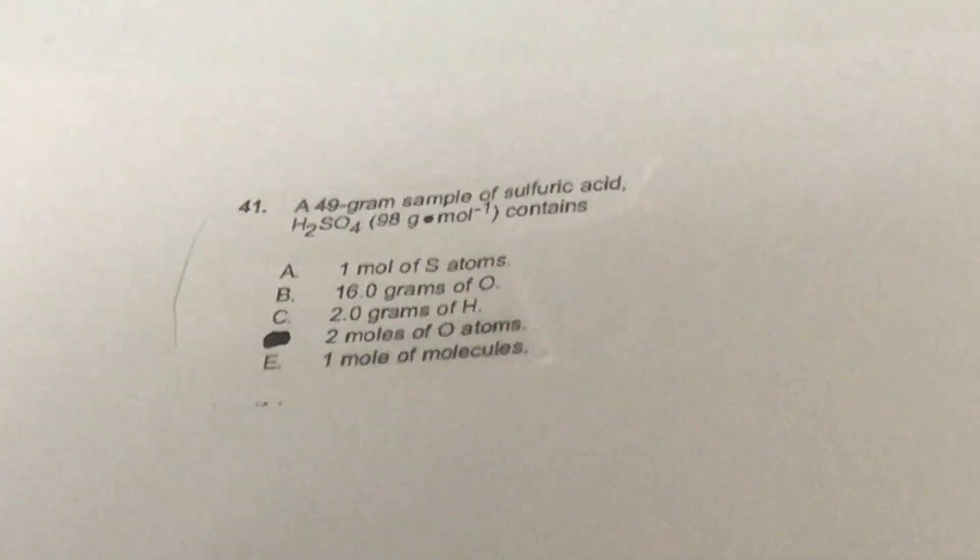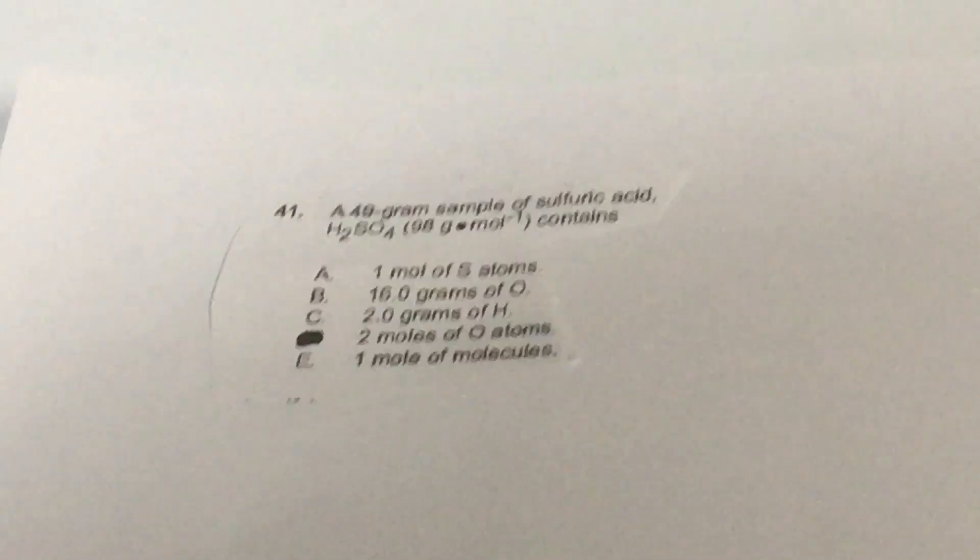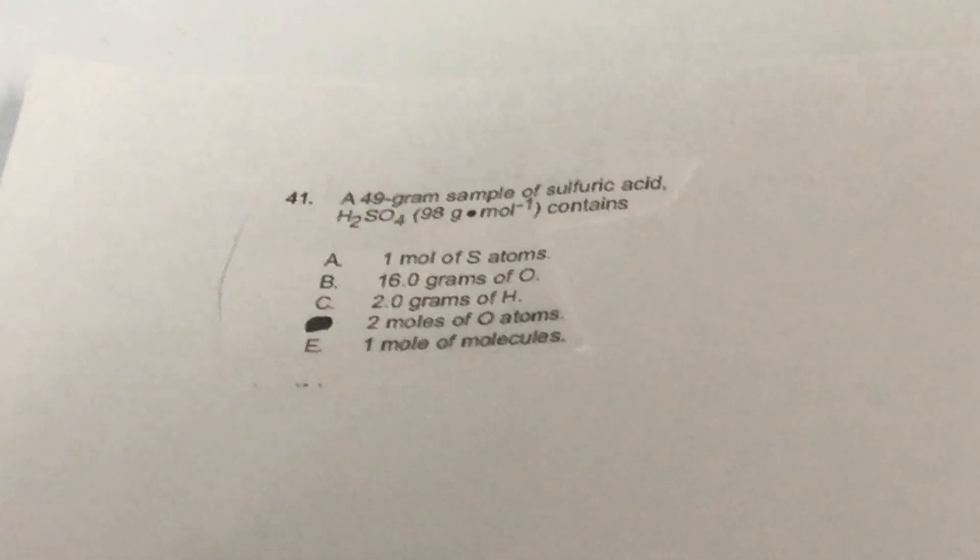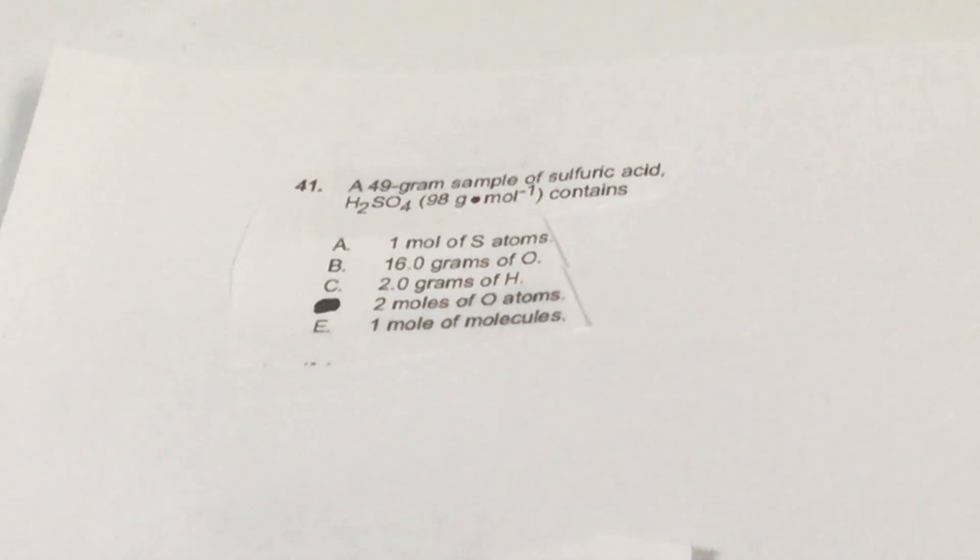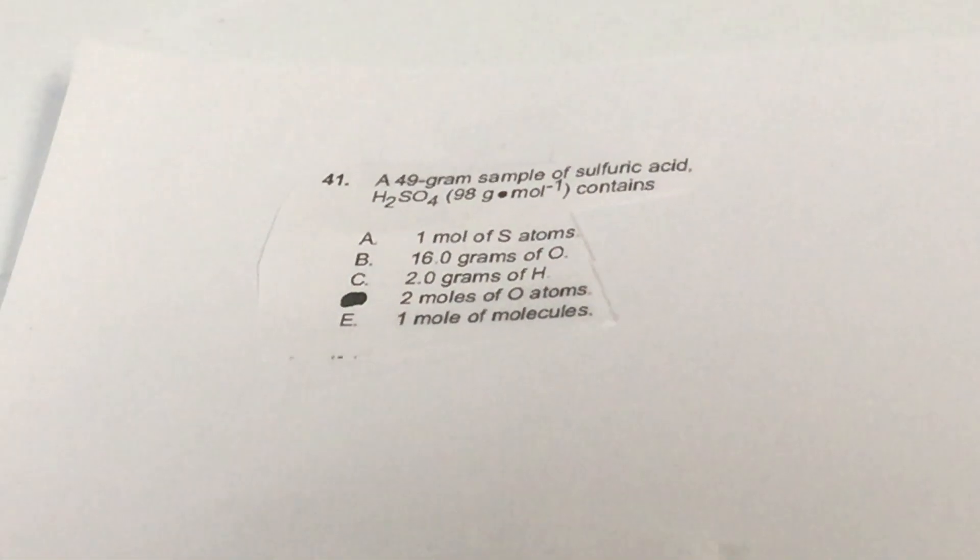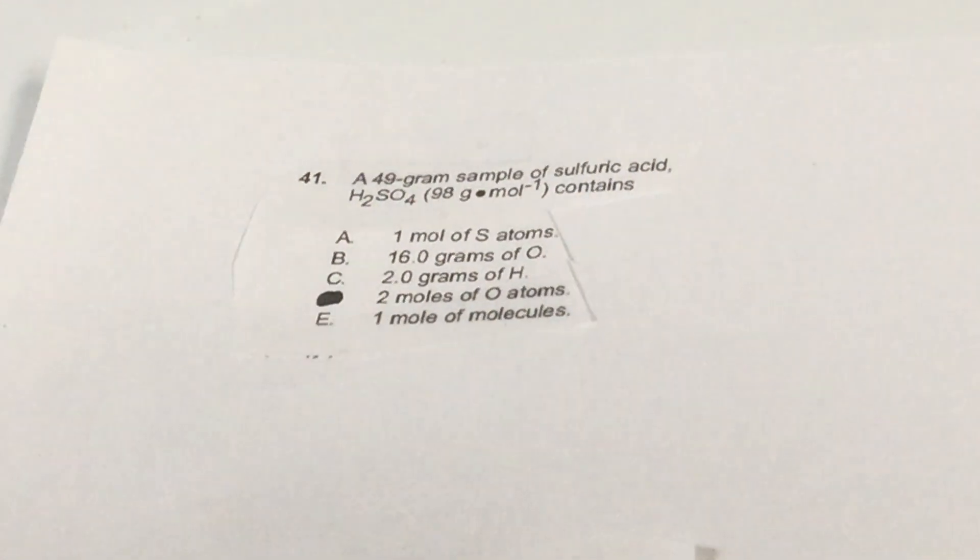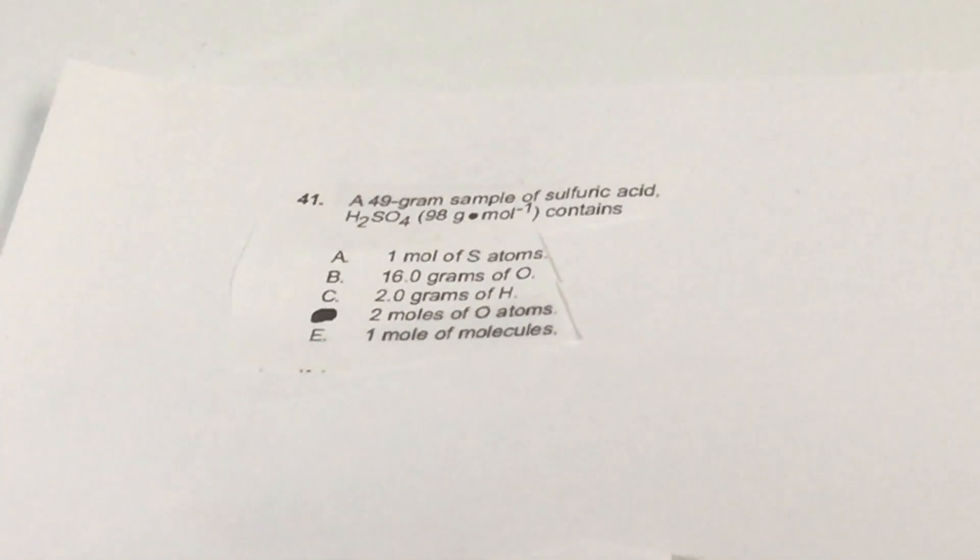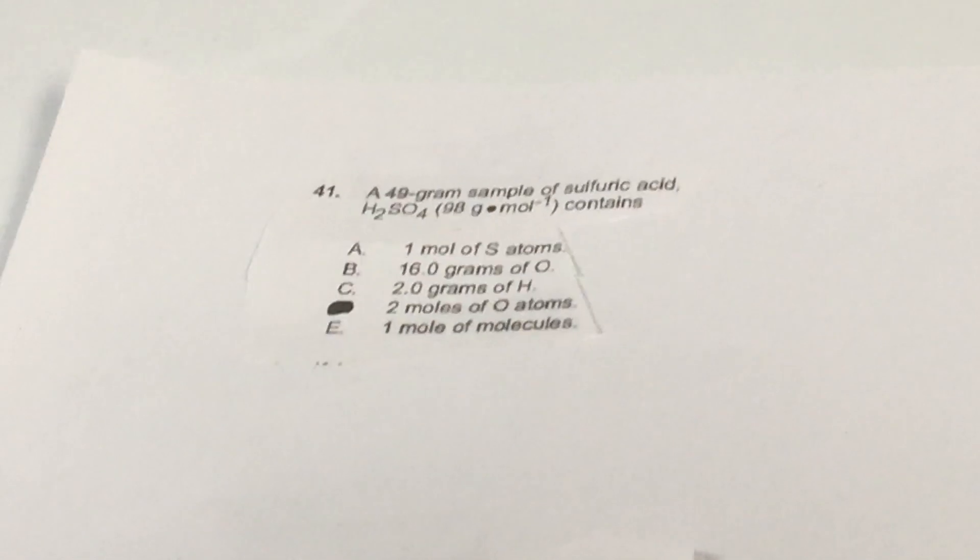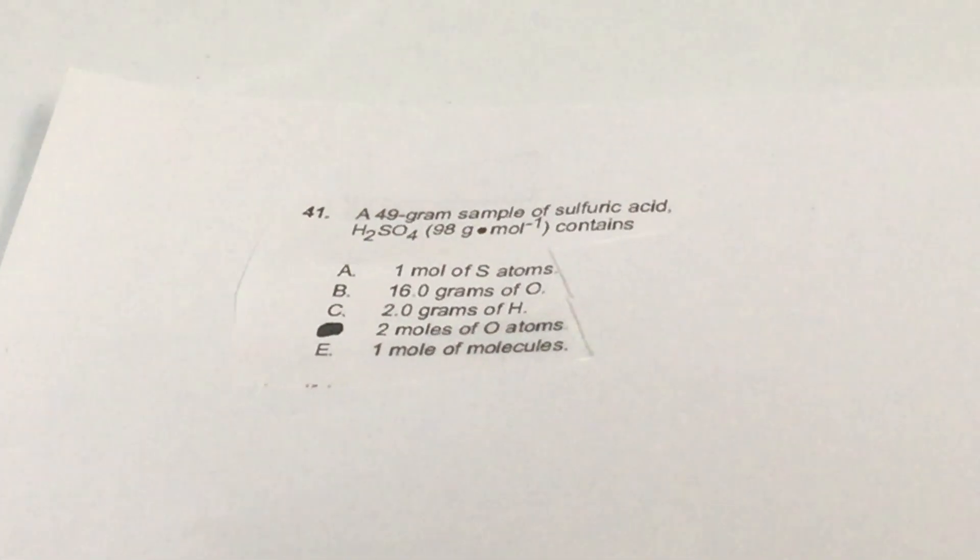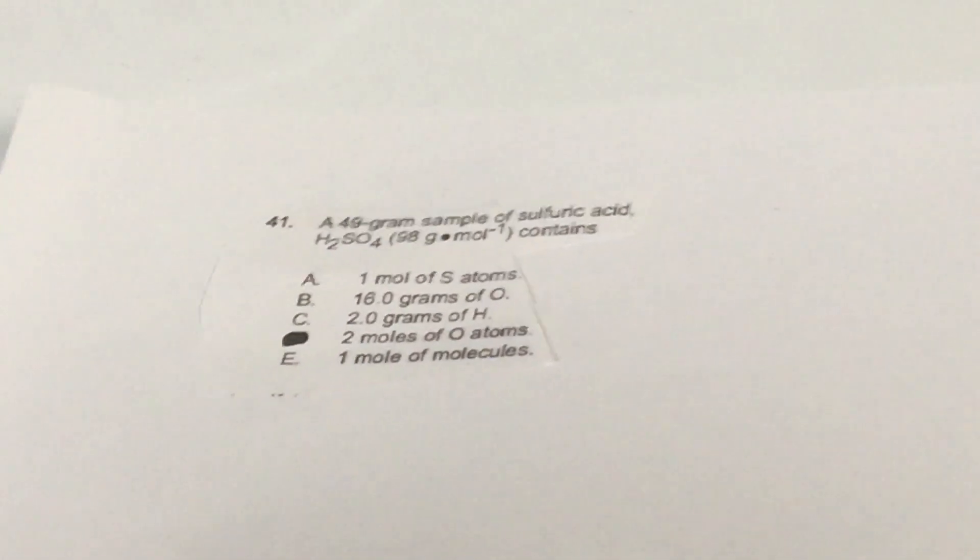In the first problem it says here that we have a 49 gram sample of sulfuric acid H2SO4 and what does it contain? Now the first thing we should do is you can see there's 49 grams and we have the weight of 98. So that's going to represent a half a mole. So if you saw that from the beginning it'll make things easier. So I'm going to assume that you can say to me if you had the grams you divided by the weight we have a half a mole. Let's go through each one.